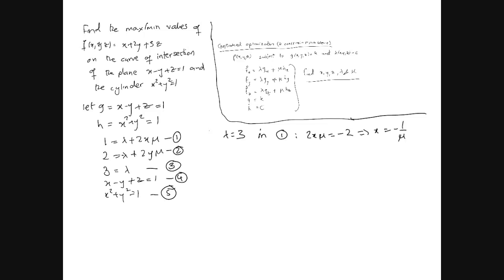Let's do lambda equals 3 in equation 2 now. Lambda equals 3 in 2 gives us 2y mu equals 5, which implies that y is 5 over 2 mu.